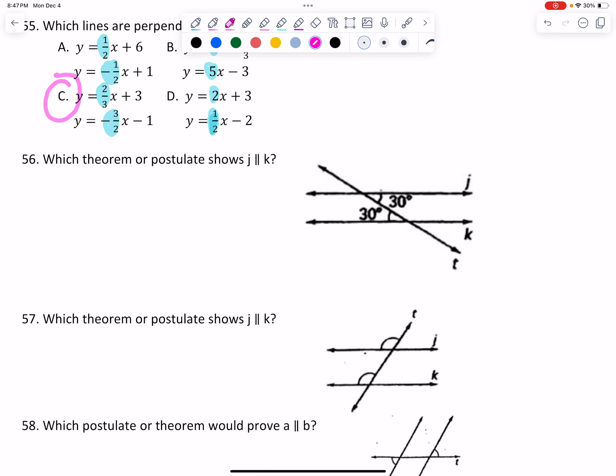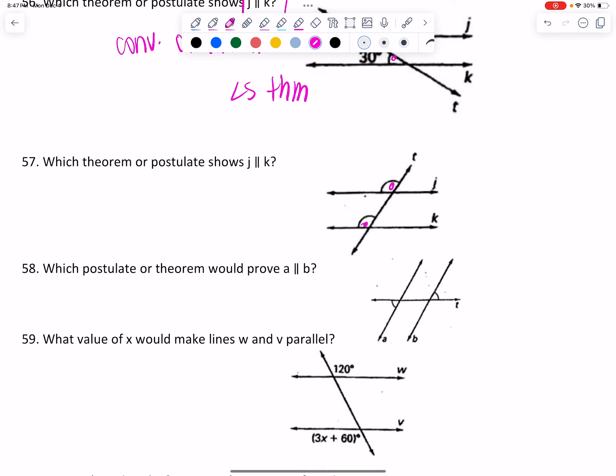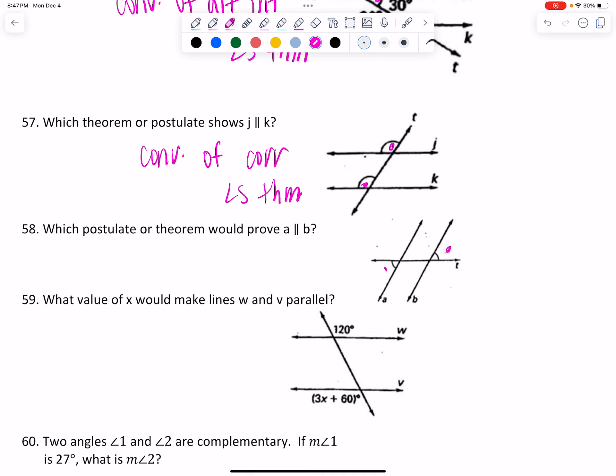So what postulate or theorem shows that these lines are parallel? These are alternate interior angles. And so that would be the converse of alternate interior angles theorem. How do I know it's converse? Anytime you're trying to prove lines parallel, it's going to be the converse theorem. So this one, these are corresponding angles. They sit in the same corner. So this would be the converse of corresponding angles theorem. These are alternate exterior that makes the lines parallel. So that would again be converse of alternate exterior angles theorem.